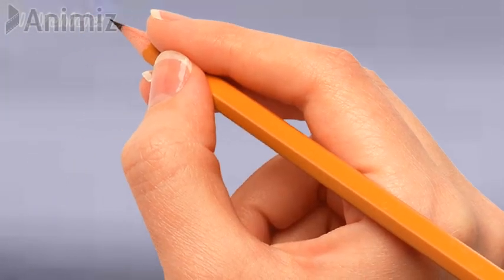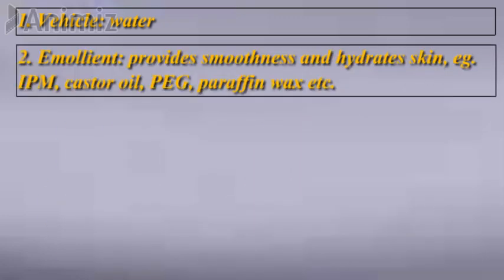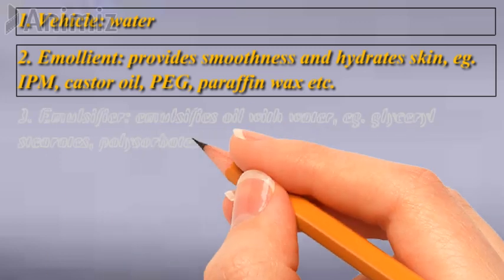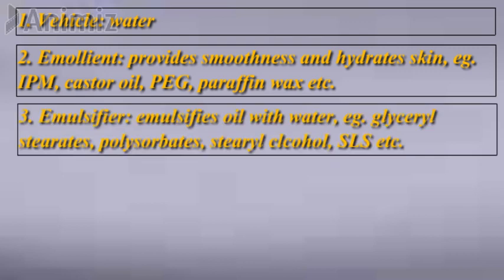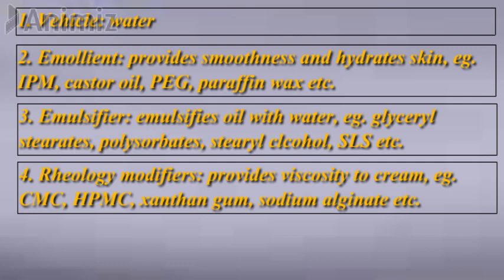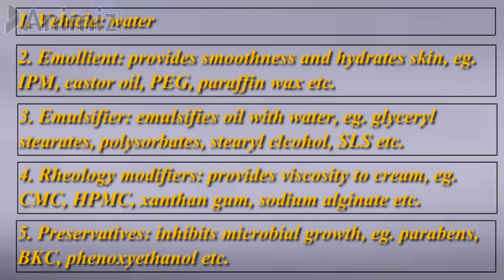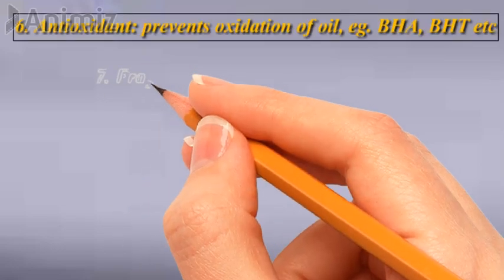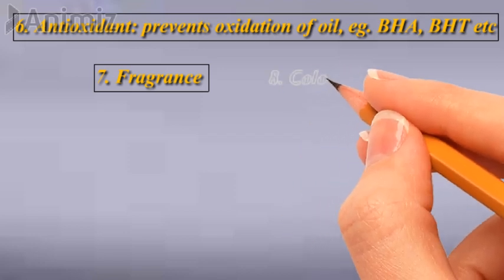Then we have topical creams, which are oil-in-water emulsions in most cases. The vehicle is water. Emollients provide smoothness and hydrate the skin — examples are isopropyl myristate, castor oil, PEG, and paraffin wax. An emulsifying agent emulsifies oil with water — examples are glyceryl stearate, polysorbate, cetyl alcohol, and SLS. A rheological modifier provides viscosity to the cream — examples are CMC, HPMC, xanthan gum, and sodium alginate. Since the vehicle is water, a preservative is added to inhibit microbial growth — examples are parabens, benzalkonium chloride, and phenoxyethanol. Antioxidants prevent oxidation of oil — examples are BHA and BHT. Fragrance and color are added to improve aesthetics.